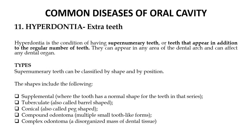A common disease associated with the oral cavity is hyperdontia. As the name indicates, it is the presence of extra teeth. Hyperdontia is the condition of having supernumerary teeth — teeth that appear in addition to the regular number of teeth — and they can appear in any area of the dental arch. Supernumerary teeth can be classified by shape — supplementary, tuberculate, conical, compound odontoma or complex odontoma — and by position. They are treated with advanced cosmetic treatments.